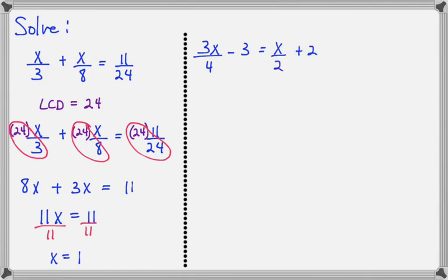And let's see this again on our next example, 3x over 4 minus 3 equals x over 2 plus 2. The common denominator here would be 4. 4 is the smallest number that 4 and 2 can both go into.